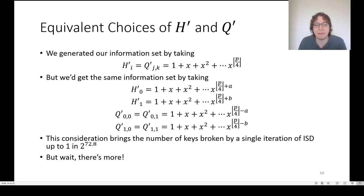We also have freedom in how we interpret which H prime and which Q prime were used to produce a given information set. If we take the degree of H prime up a bit and the degree of Q prime down a bit, or vice versa, we will produce the same information set. And as long as any H and Q is contained in the support of any H prime and Q prime, the key will be recovered. This consideration brings the number of keys broken by a single iteration up to 1 into the 72.8. But there's more.